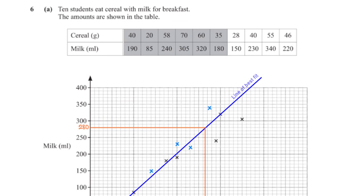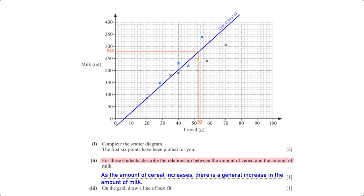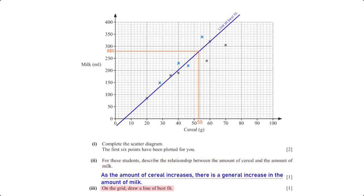10 students eat cereal with milk for breakfast and their amounts are shown in a table. Complete the scatter diagram — the first 6 points are plotted; we add the remaining points: (28, 150), (42, 30), (55, 340), and (46, 220). The relationship between cereal and milk shows that as the amount of cereal increases, there is a general increase in the amount of milk. A line of best fit is drawn on the grid.